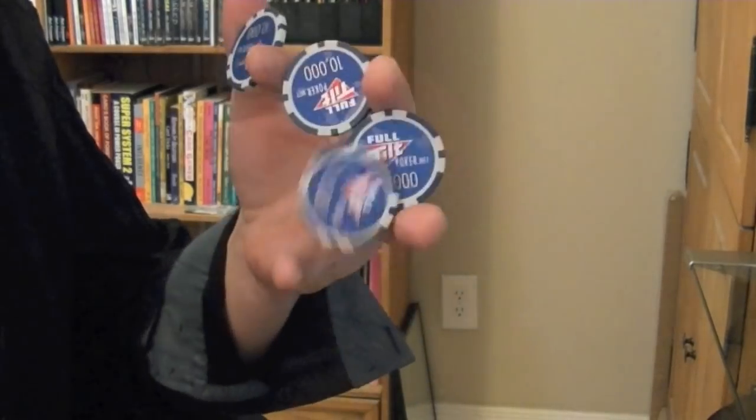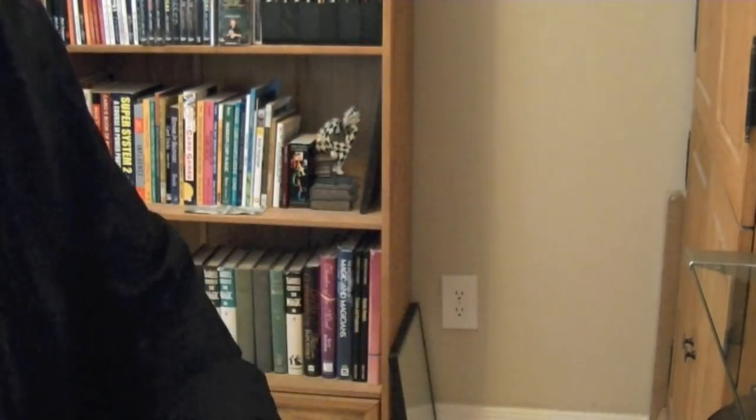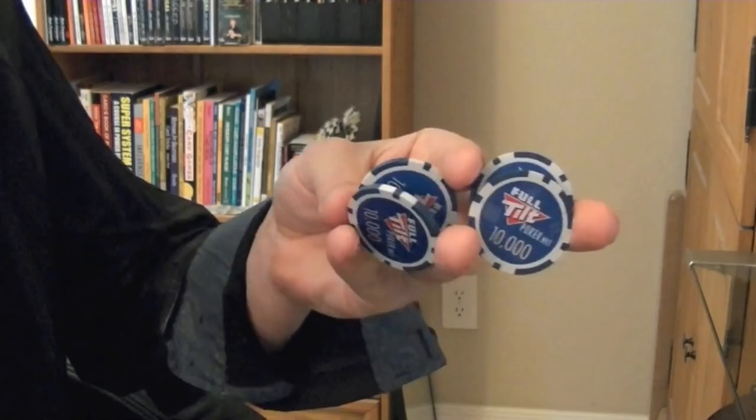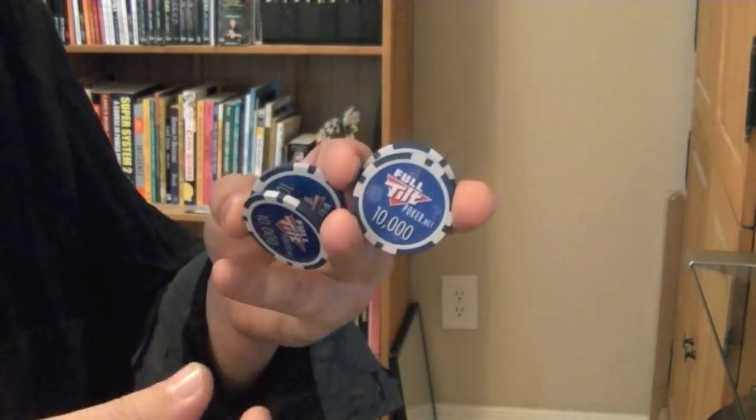This is derived from two different chip tricks you might be familiar with. There's the roll down, and then there's the opposite of the roll down, which is the butterfly, which is splitting two chips and then spreading them apart. So you'll recognize this position during the Rock and Roll.